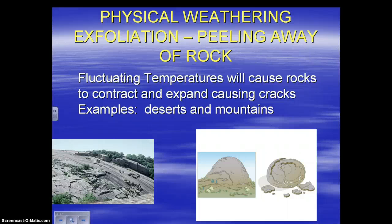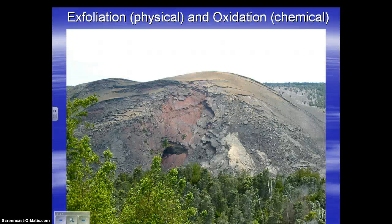There's also exfoliation. You might have heard of exfoliating scrubs with beauty products — where the dead skin on the outermost layer comes off. Same thing happens with rocks. Fluctuating temperatures often cause this — it gets hot, it gets cold, repeatedly. It's similar to freeze-thaw cycles but different because there isn't necessarily water involved. This image I took in Hawaii in 2003, and you can notice clear exfoliation.